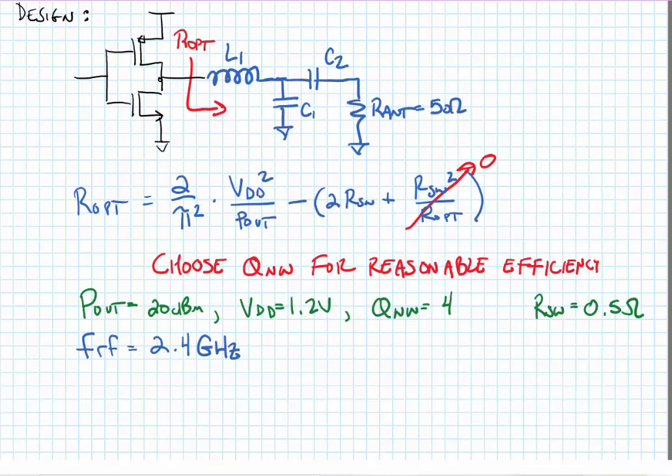Last time I said we would start the next lecture with a brief example. I gave you a design example where we were supposed to design a class D PA for an output power of 20 dBm using a supply voltage of 1.2 volts and assuming a Q network of 4. Well, if you weren't able to do this, it was my mistake. This is impossible to do with a Q network of 4 given the switch resistance of half an ohm. So instead, let's just make the Q network 6.